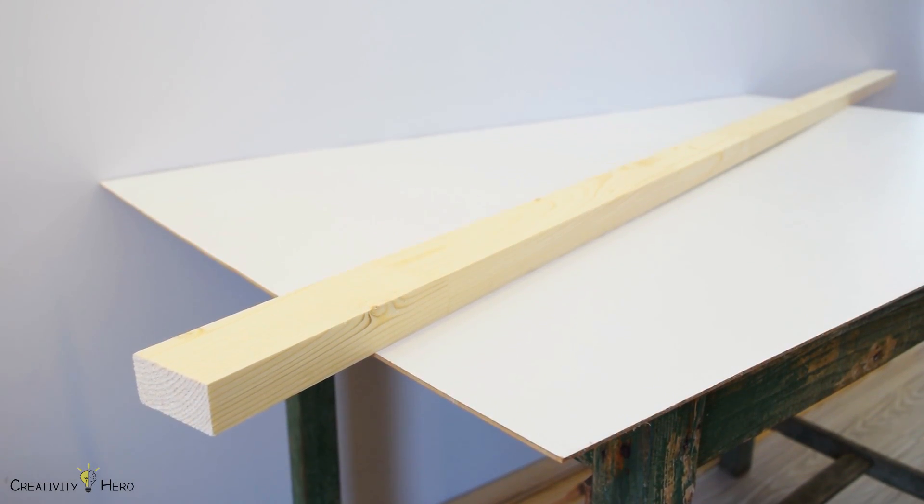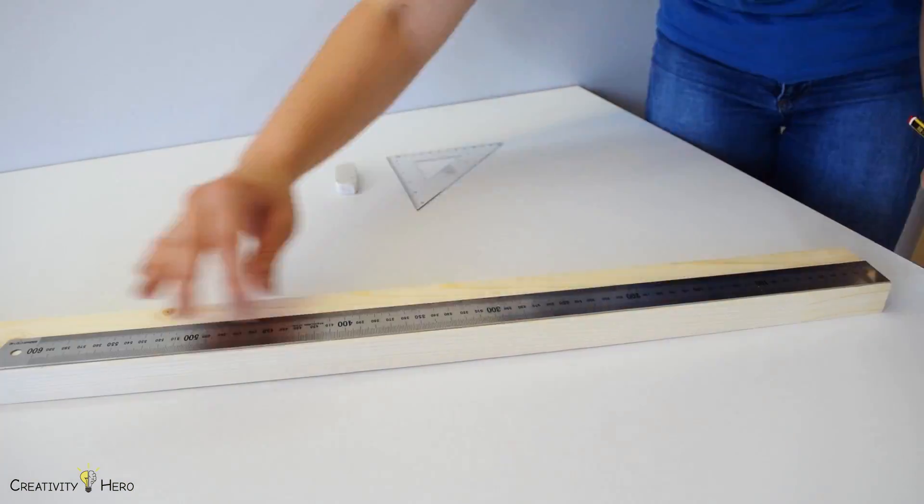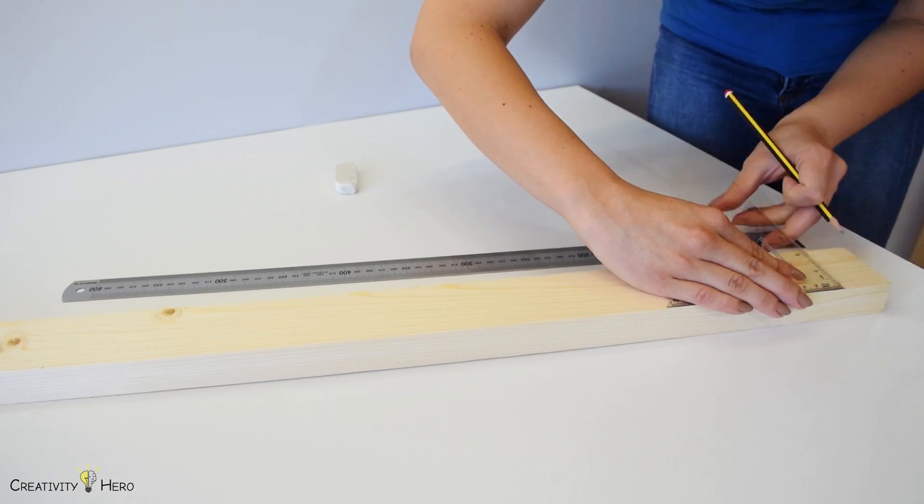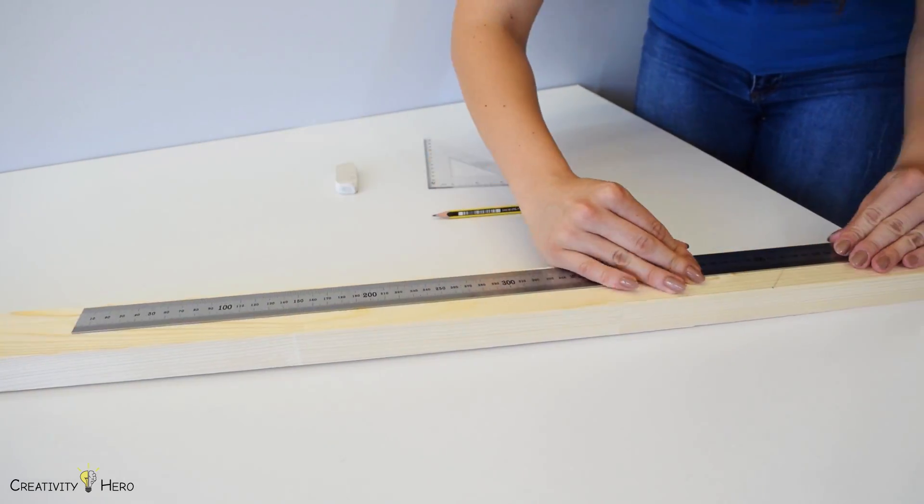For this project I'm using 3 by 6 centimeters wood strip. The dimensions of the wooden frame are 55 by 35 centimeters so I've measured and marked two pieces 55 centimeters long and another two pieces 35 centimeters long.